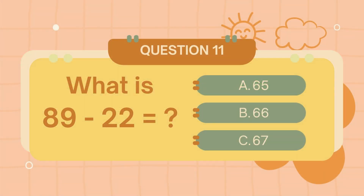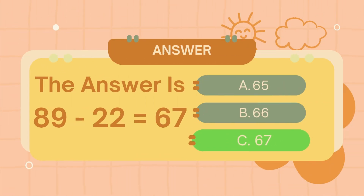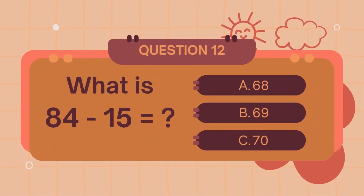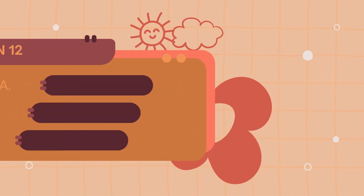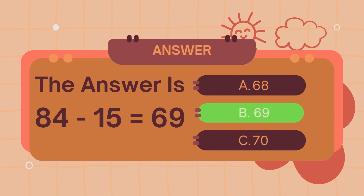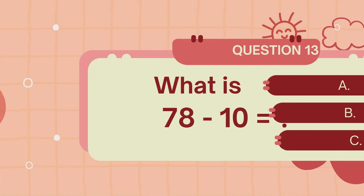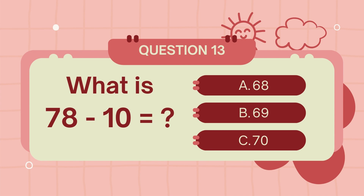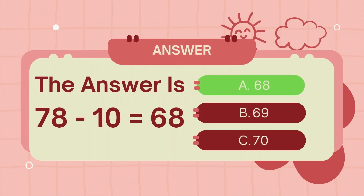What is 89 minus 22? The answer is 67. What is 84 minus 15? The answer is 69. What is 78 minus 10? The answer is 67.